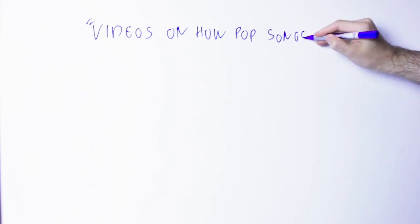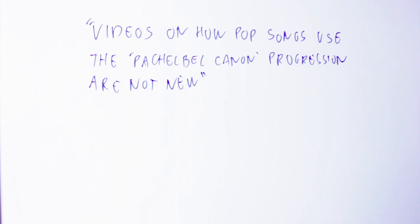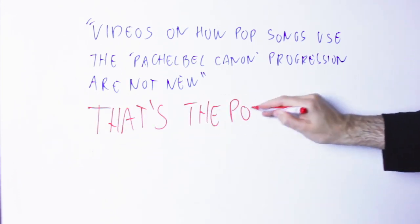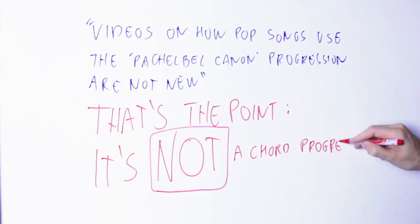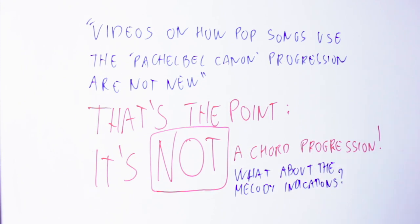Now I know some of you will tell me that videos on how pop songs use the same four chord pattern have already been made — they're nothing new. But you see, that's exactly the point. The Romanesca is not four chords — it's a pattern made of melodies that work together and made to be elaborated. It's not just four chords. An important part of this pattern is the indication that the melody usually gravitates around the first and fifth degree of the key. If you think of the Romanesca as just four chords, you completely lose this.